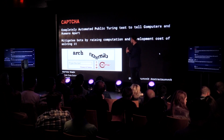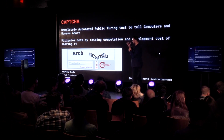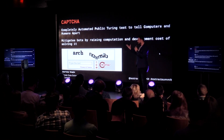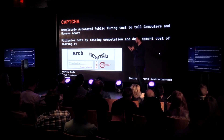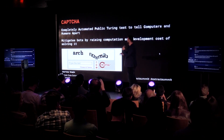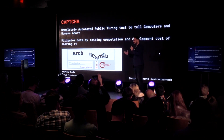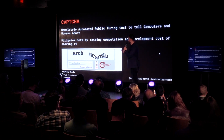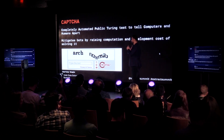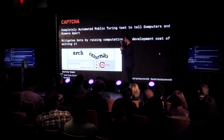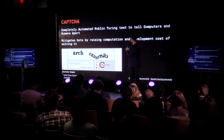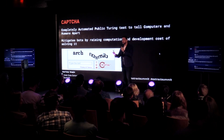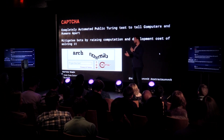From browser fingerprinting, we move to something that is pretty synonymous with the web. CAPTCHA uses something called HIP, or Human Interactive Proof. The whole basis and premise of CAPTCHA is that humans are going to be better at solving visual puzzles than computers.